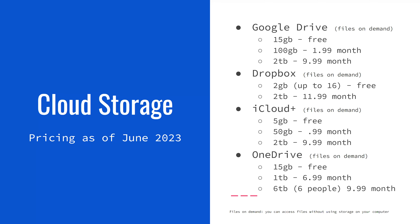So cloud storage — these are the main ones, I would consider these the big four. We have Google Drive, Dropbox, iCloud, and OneDrive. Google Drive is by Google. All of these have very similar pricing. Google Drive is two terabytes of storage for $10 a month. Dropbox has two terabytes for $12 a month. iCloud has two terabytes for $10 a month. And OneDrive has one terabyte for $7 a month or six terabytes for $10 a month. Google Drive is by Google, Dropbox is by Dropbox, iCloud is by Apple, and OneDrive is through Microsoft.